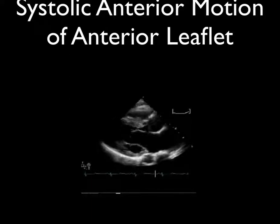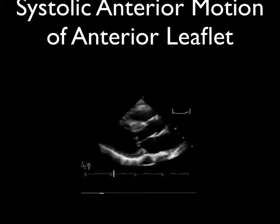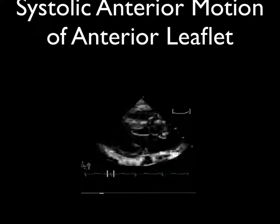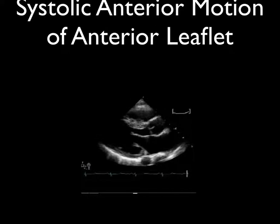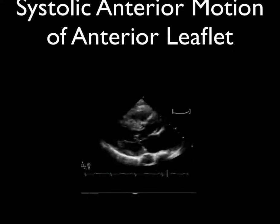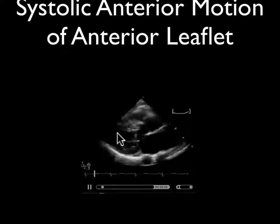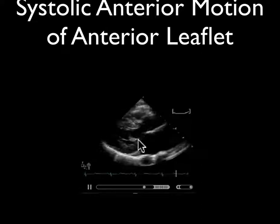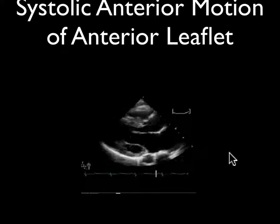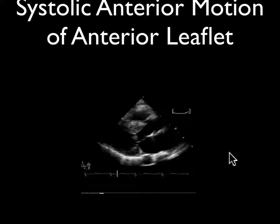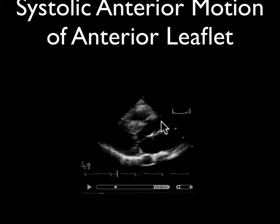Another finding is systolic anterior motion — you can get a systolic leaflet which further obstructs the outflow tract. Here is a cardiac ultrasound showing systolic anterior motion of the anterior leaflet of the mitral valve during systole. As the heart's squeezing, look what happens — that anterior leaflet flips up anteriorly and blocks the outflow tract. At end systole, this leaflet flips up and actually occludes the flow of blood trying to get out of the aorta. You can also see how thick this septum is.